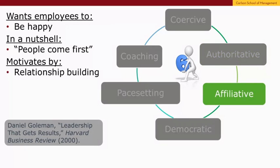In an affiliative style, people and relationships are the most important. These types of managers essentially want employees to be happy. Their catchphrase would be, "people come first," and they motivate employees through building relationships with them and helping them build relationships with each other.